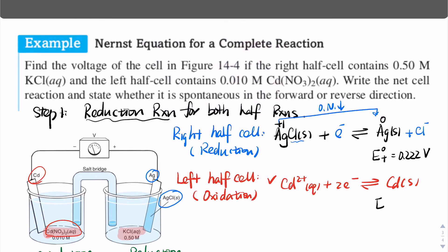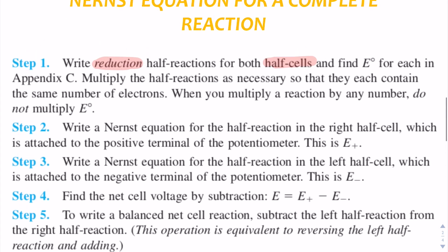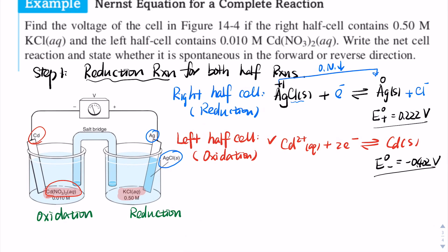The E° for the cadmium reduction half-reaction is negative 0.402 volts — all these values are given during the exam. Now, the rule says to multiply the half-reactions as necessary so they each contain the same number of electrons. The first half-reaction has one electron and the second has two, so we multiply the first reaction by two to equalize them.